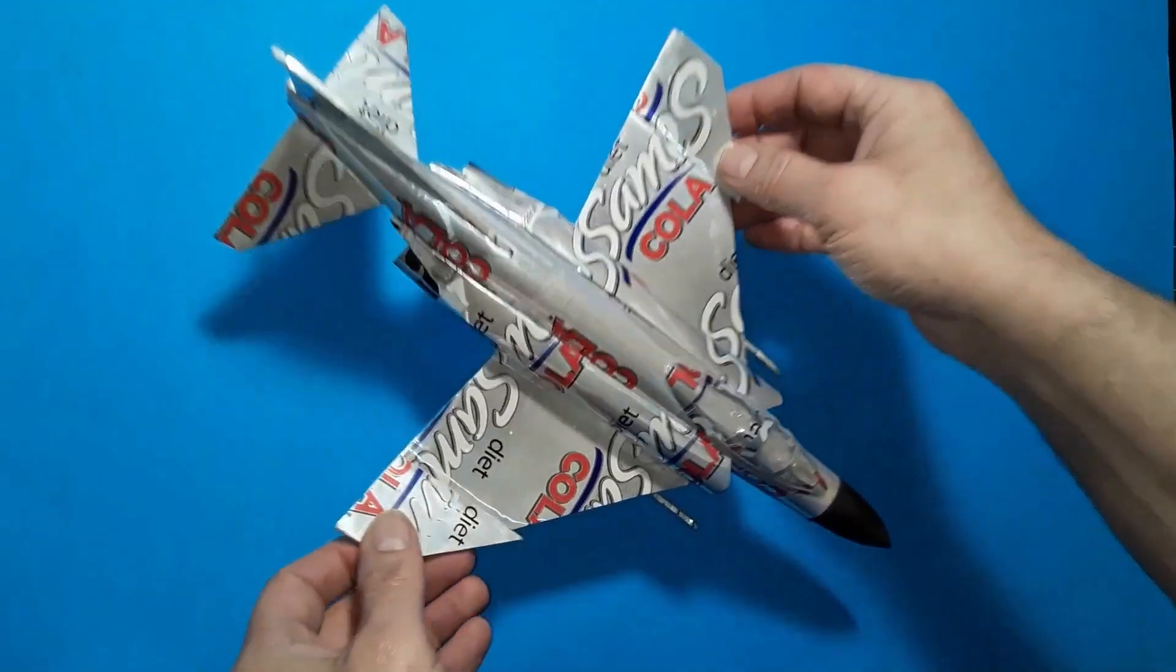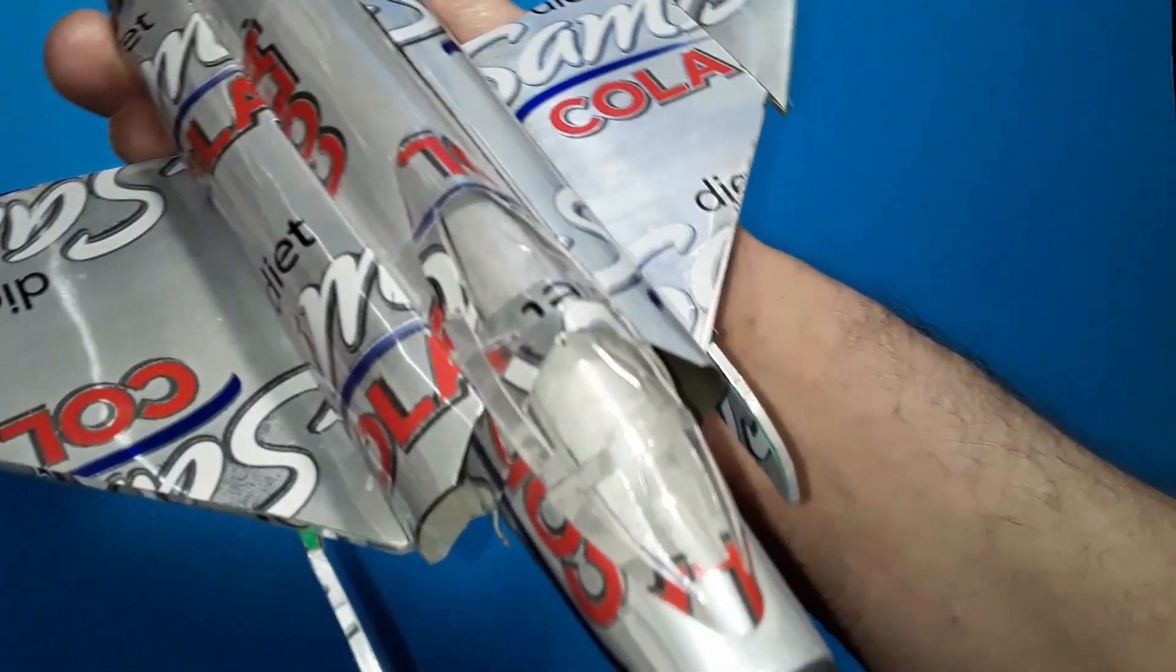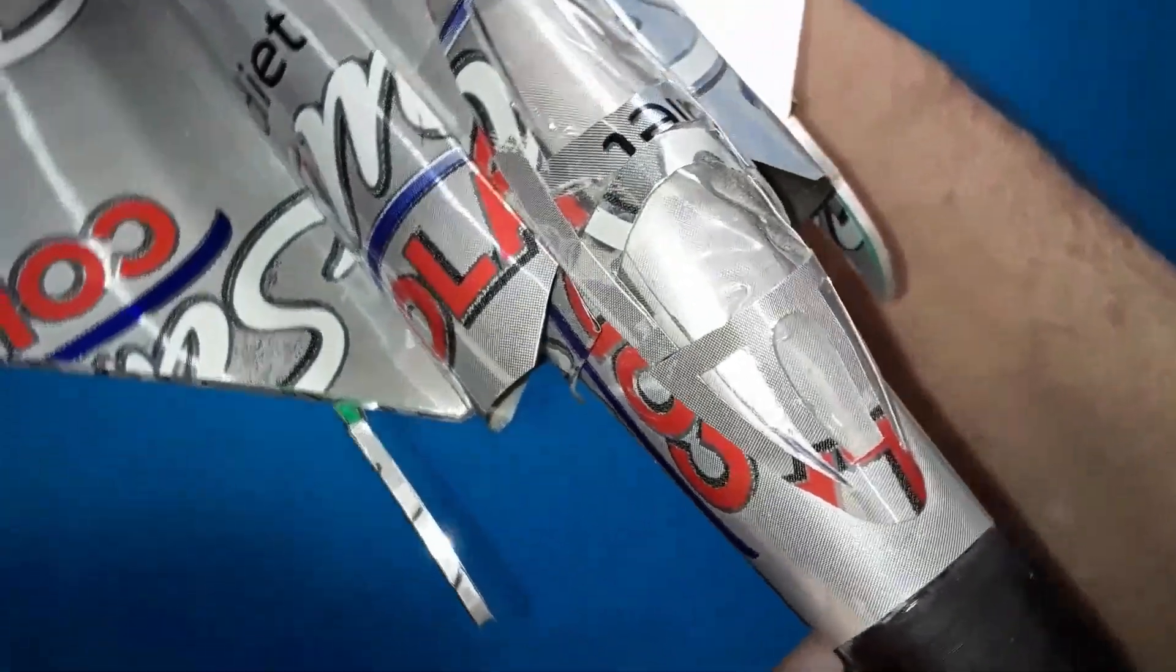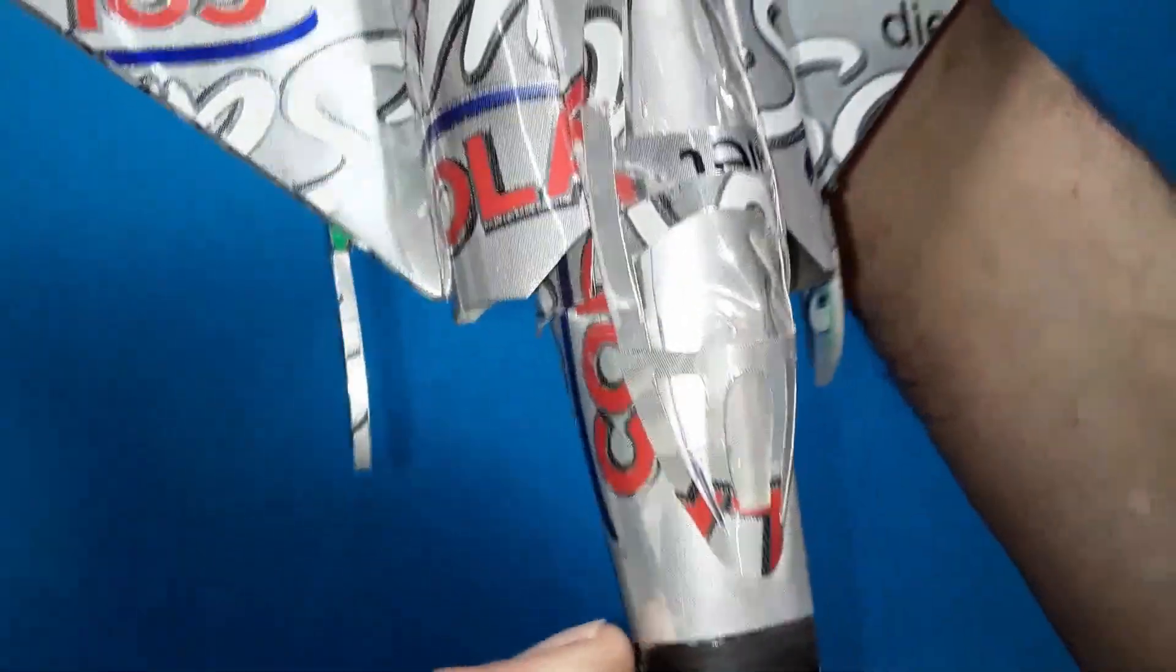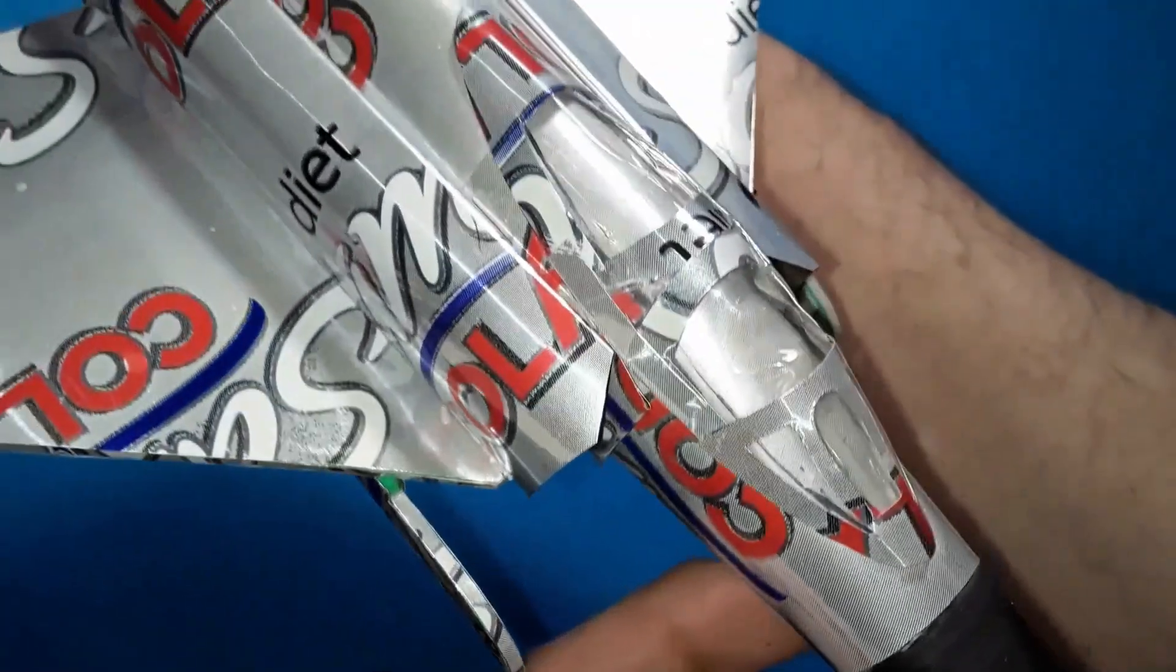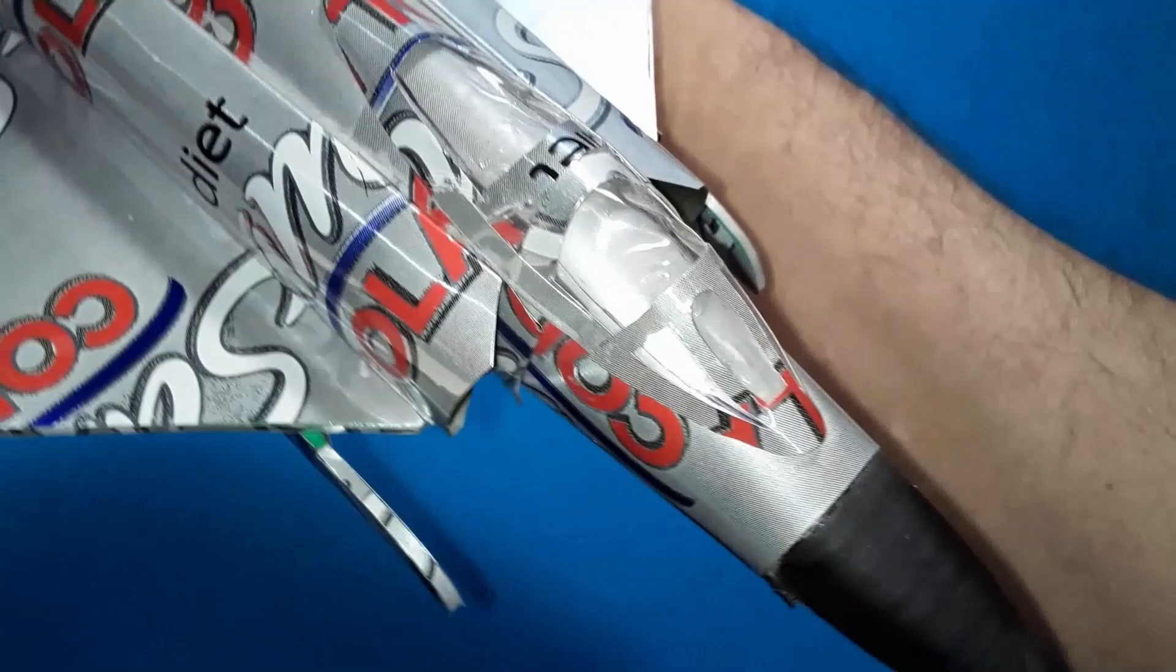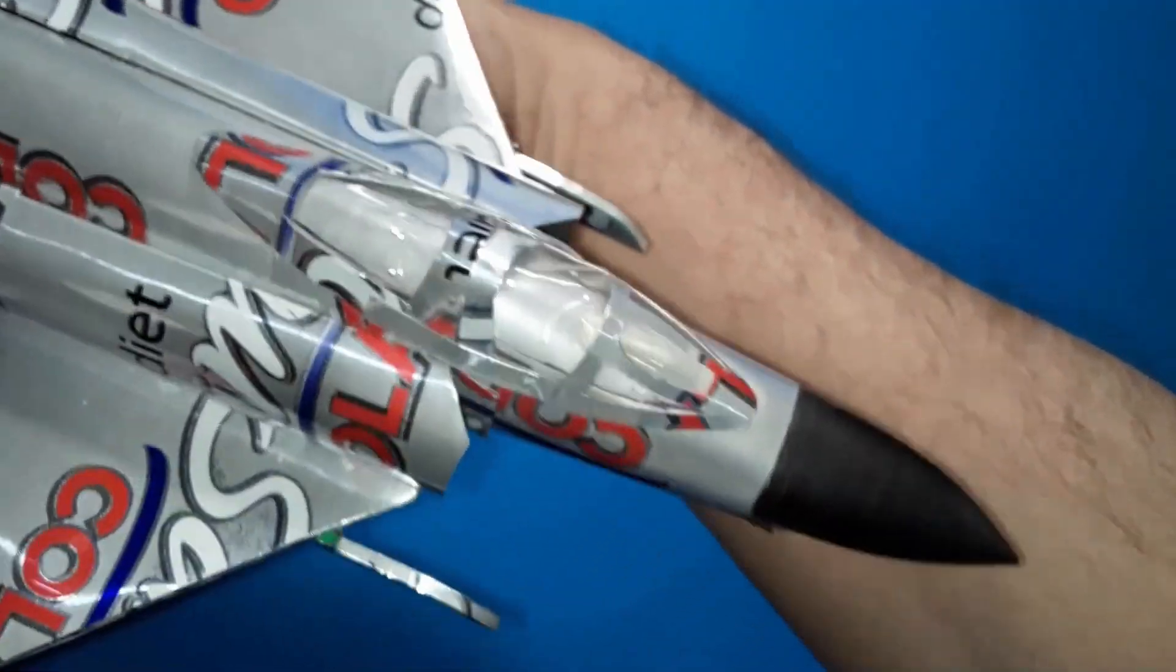Next, check out this F-4 Phantom. This is another plane that just wouldn't look right if the canopy didn't look like the real thing. Clear vinyl is easy to work with and is a cheap and viable alternative for making soda can airplane canopies. This one looks pretty slick too, but there's another way to make canopies.